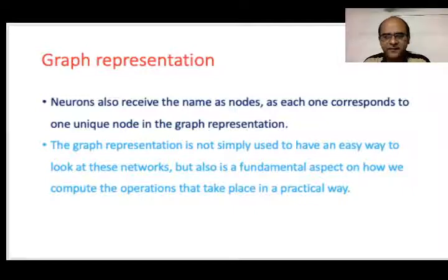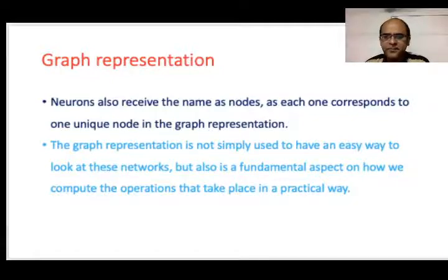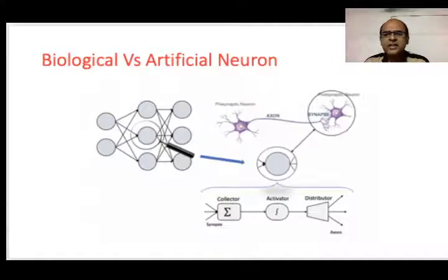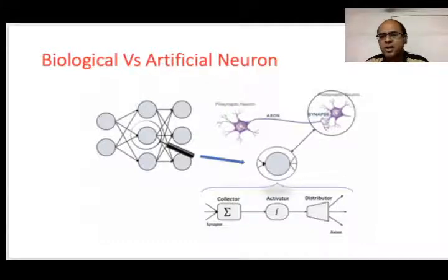This graphical representation is not simply used to have an easy way to look at the network — at a fundamental level, we are able to compute the operations that take place in a more practical manner. This slide shows how a biological neuron differs from an artificial neuron. The biological neuron has the soma, axon, and other aspects, while the artificial neuron has the input layer, hidden layer, and output layer.